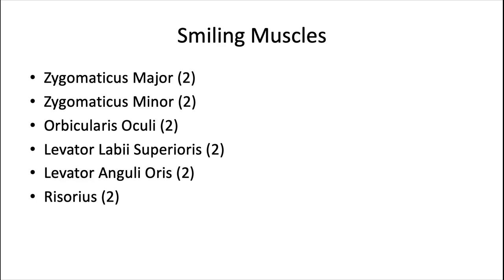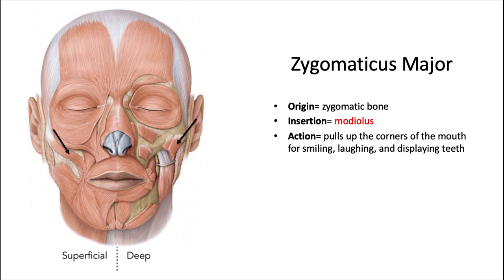Note that all of the smiling muscles we're about to discuss are paired — there's one on the right and one on the left. The zygomaticus major muscle originates from the zygomatic bone and inserts into the modiolus. The modiolus is an important structure — it refers to the chiasma or intersection of a whole bunch of facial muscles, just lateral and slightly superior to each corner of the mouth. This muscle pulls up the corners of the mouth for smiling, laughing, and displaying the teeth.